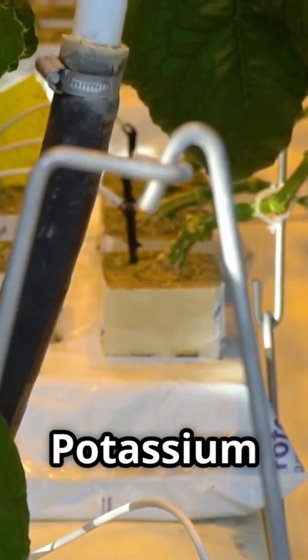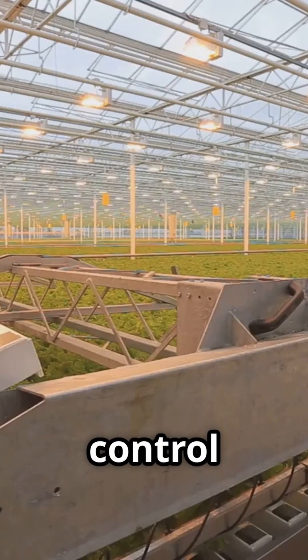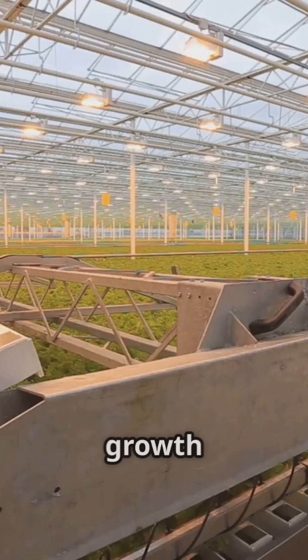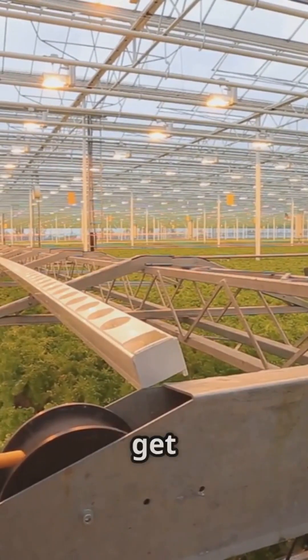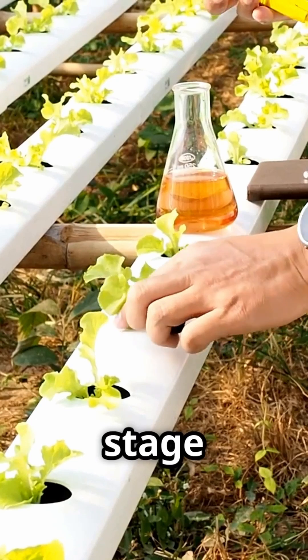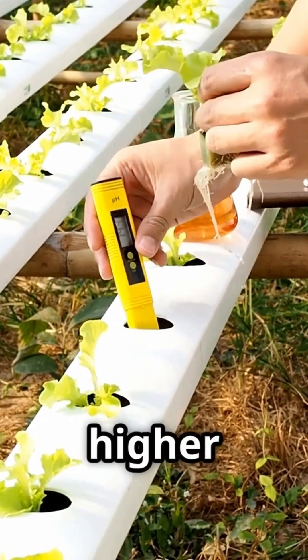This gives you more control over the nutrient balance for different plant growth stages. By adjusting the ratios, you can ensure that your plants get exactly what they need at each stage of their life cycle. This level of control can lead to healthier plants and higher yields.